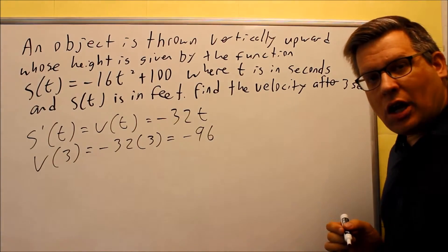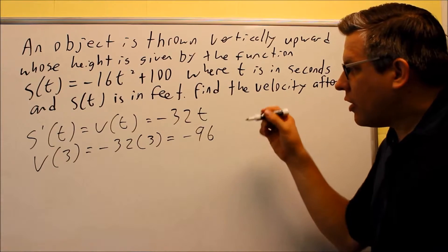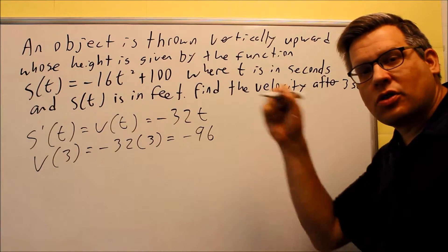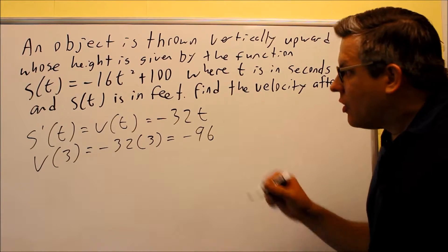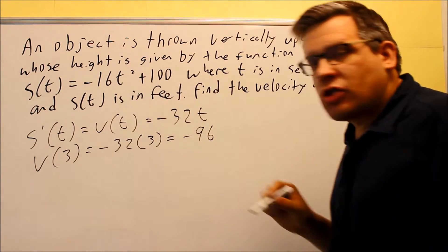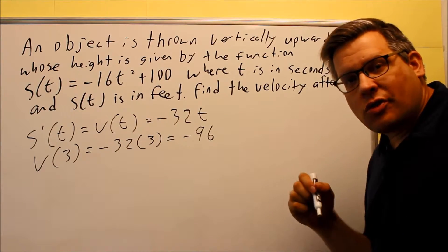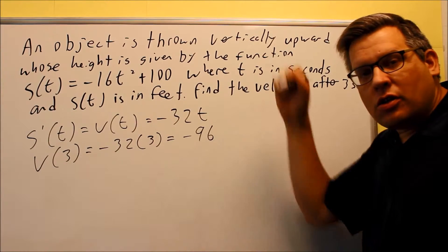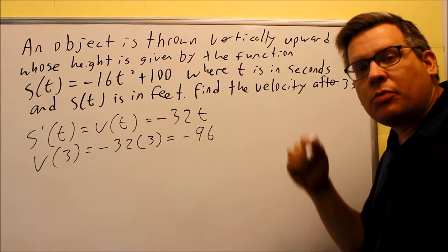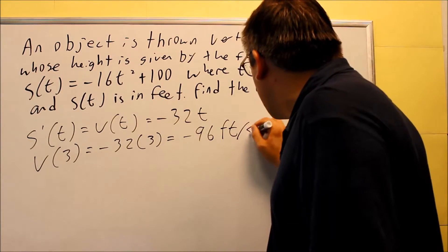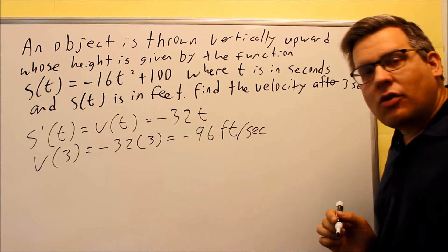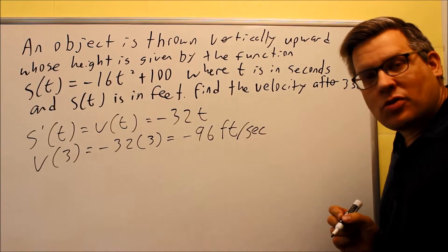So let's talk about the units that you're going to have here. Think about your velocity as a slope. It's position versus time. Our position is given in terms of feet, and time is given in terms of seconds. So if we do the slope on that, that would be the rise over run, feet over seconds. So that means that your unit would be feet per second, negative 96 feet per second.